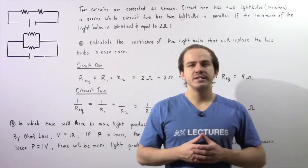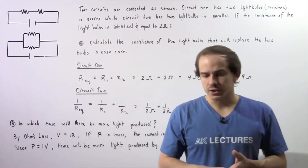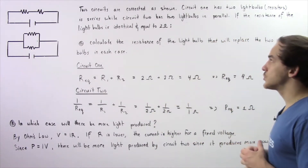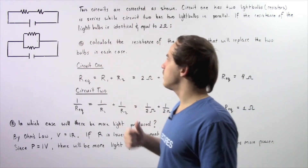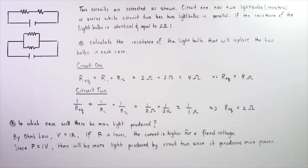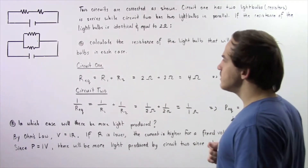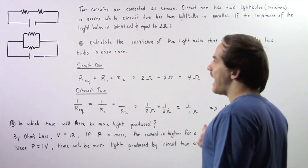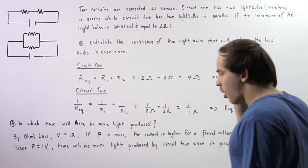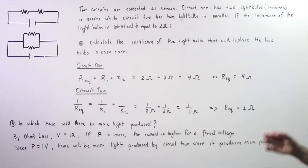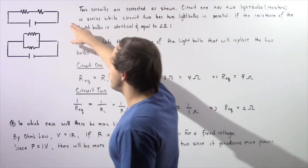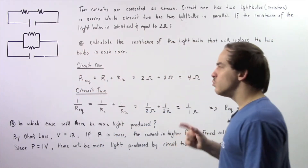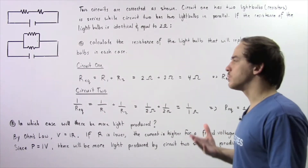Let's examine the following example that deals with resistors placed in electric circuits. We have two electric circuits connected as shown in two diagrams. Circuit one has two light bulbs connected in series and circuit two has two light bulbs connected in parallel. The resistance of the light bulbs is identical and equal to two ohms. In part A, calculate the equivalent resistance that will replace the two light bulbs in both cases, and in part B, determine in which case more light is produced.